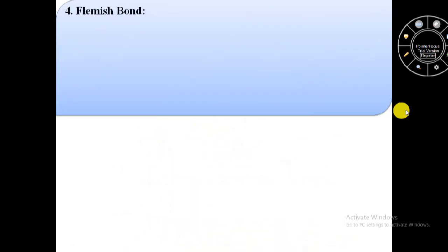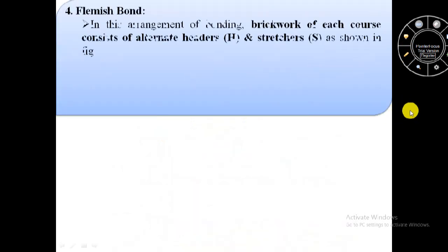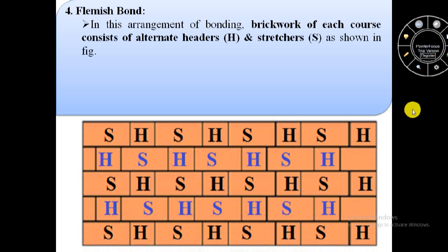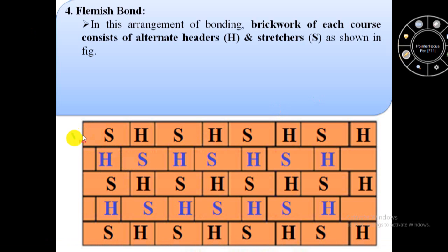Now the next type of bond is Flemish bond. In this type of bond, brickwork of each course consists of alternate headers and stretchers. In this image we can see each course contains headers and stretchers alternately arranged throughout.